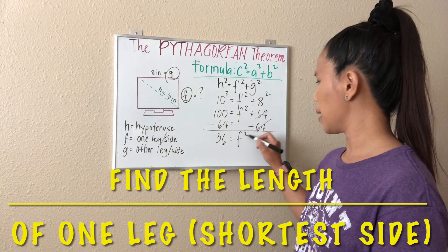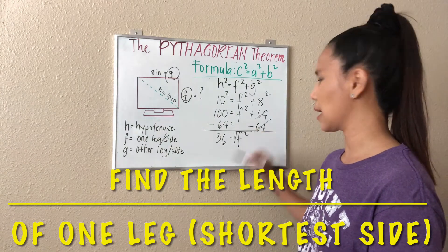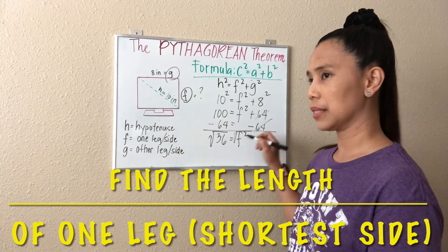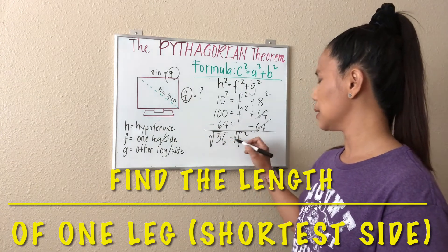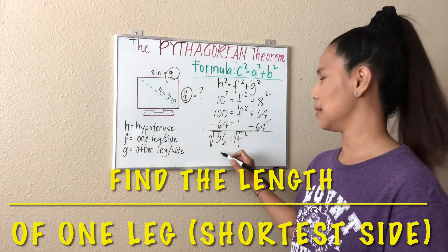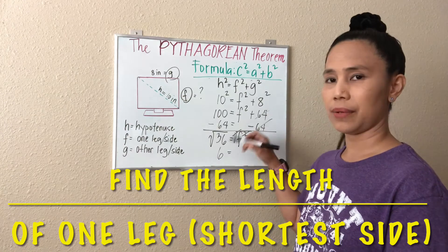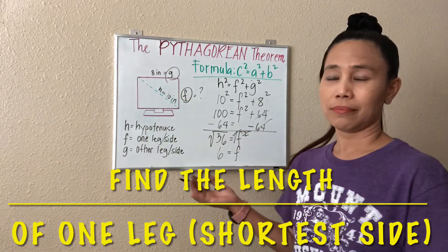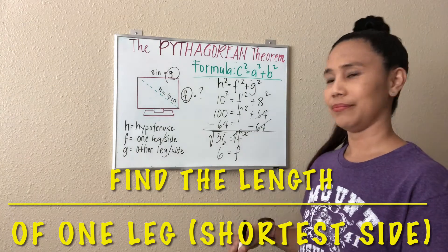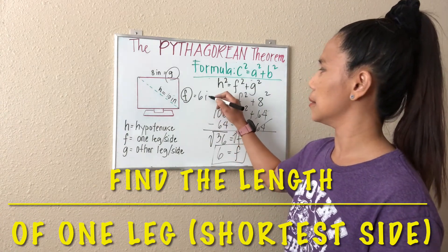We bring down F squared. It still has an exponent, so we have to eliminate that — we are getting the square root of F squared. Since we are getting the square root on the right side, we have to do that on the other side as well. So the square root of 36 is equal to the square root of F squared. The square root of 36 is 6, because 6 times 6 is 36. And the square root of F squared is F — just thinking of it as the exponent 2 and the square root being canceled. F times F is F squared, so the root of F squared is F. So F is equal to 6 inches.